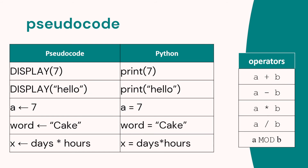Here are some examples of pseudocode and the Python equivalent. Instead of print we use DISPLAY. For a variable A with value seven, in pseudocode we use an arrow rather than the equal sign — same for strings. For operators, we can use more than one — for example, days times hours: in pseudocode we write the two variables days and hours with the multiply operator, and the result goes into variable x.